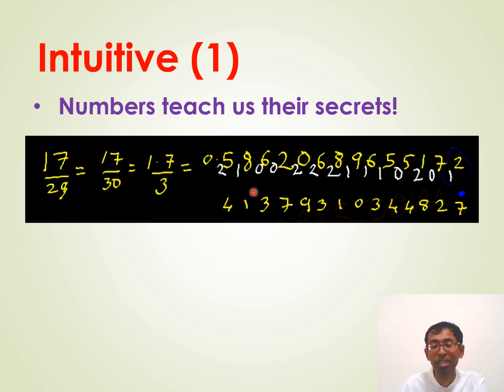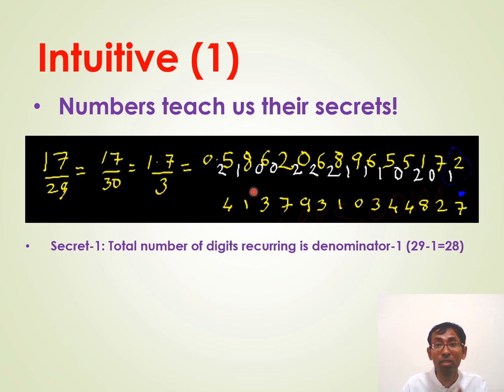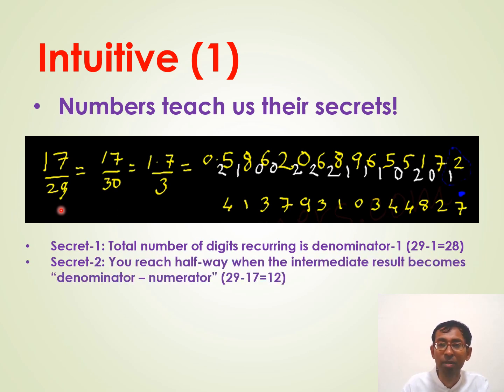Not only that. There are three secrets here. Number one. The total digits that are recurring, the twenty-eight, is actually coming from this denominator, twenty-nine minus one. And the second secret is, as you calculate, you can check if you are doing right or wrong. When you reach halfway stage, that is at the fourteenth answer, here the intermediate result becomes twelve. Which is nothing but this denominator minus numerator. Twenty-nine minus seventeen is twelve.